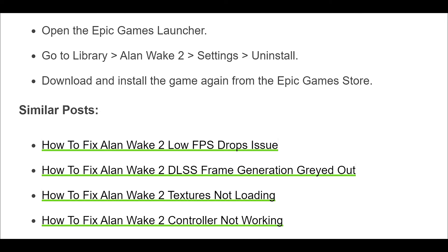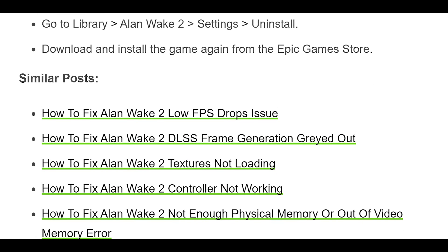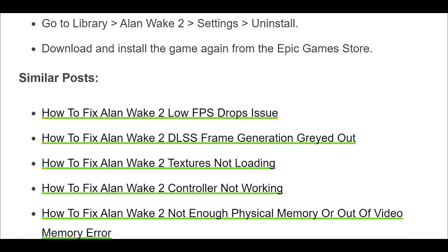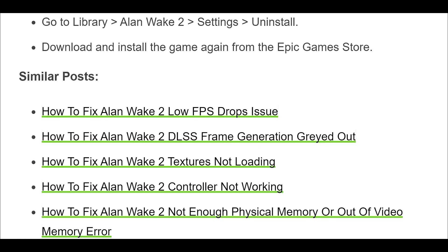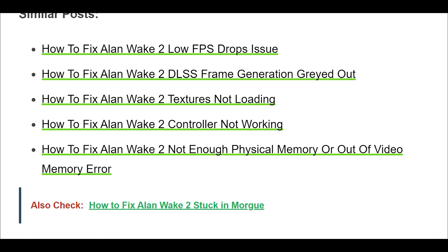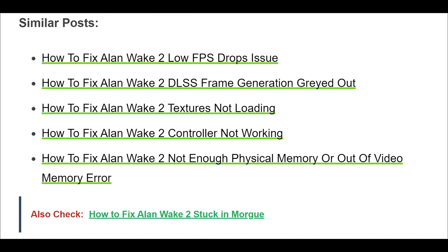7. If all else fails, you can try reinstalling the game. Before doing this, make sure to back up your game saves and settings. Open the Epic Games Launcher. Go to Library > Alan Wake 2 > Settings > Uninstall. Then download and install the game again from the Epic Games Store.